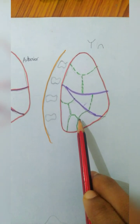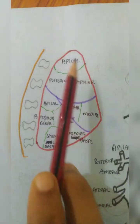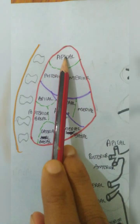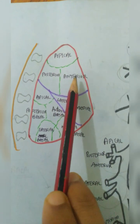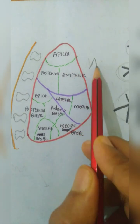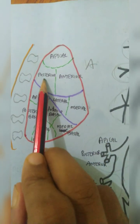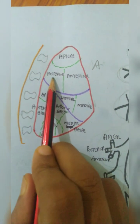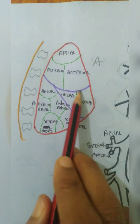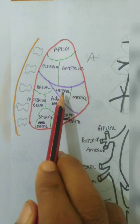Now, next is naming the segments. This is the upper lobe — this is apical, this is more anteriorly situated, so this is anterior and this is posterior. This one is the middle lobe — this is medially situated, so medial and lateral.